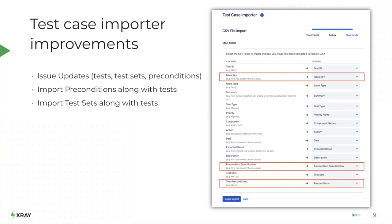Another feature is related to the test case importer. We released a lot of improvements. You are now able to update existing issues in Jira — not only creating new issues like before. If you imported test issues and made a mistake, you can edit them by mentioning the issue key in the CSV file. We now also support preconditions and test sets to be imported along with test cases, and you can associate them with each other while importing through the CSV file.